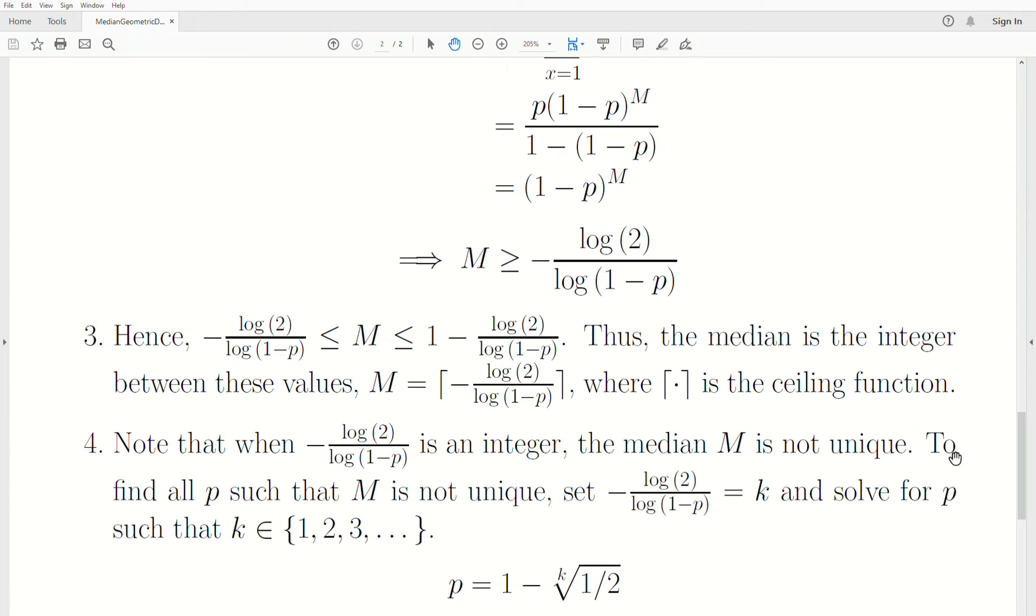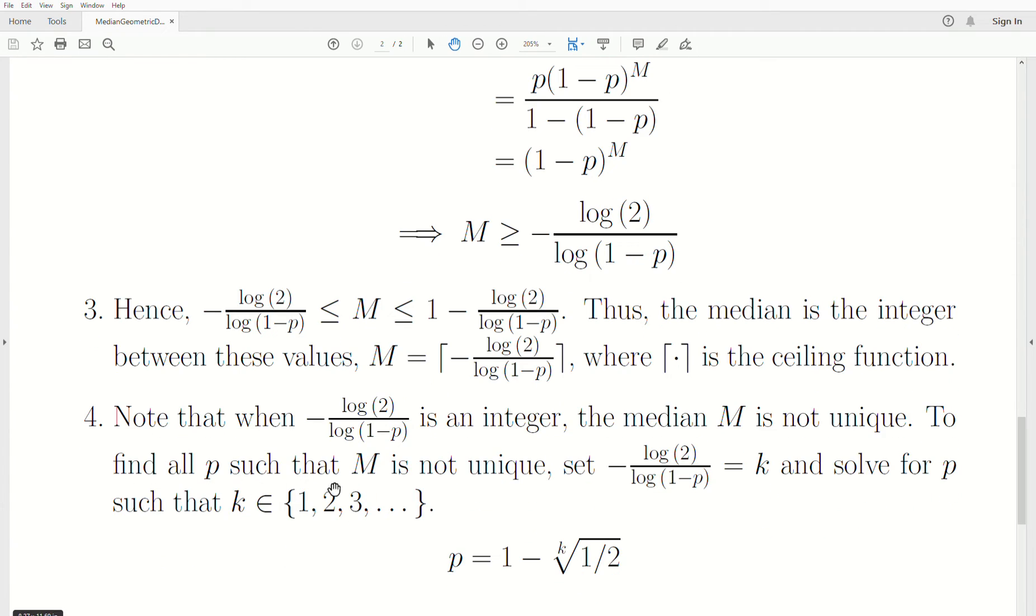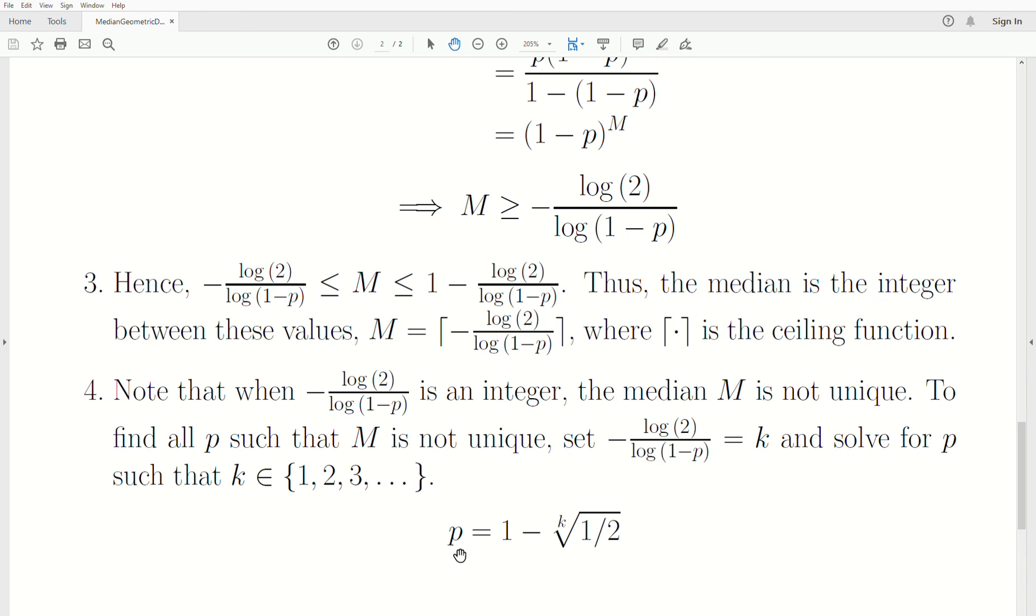To find all p such that M is not unique, let's just set this lower bound equal to some integer k and then solve for p such that k is 1, 2, 3, an integer. You can back solve for p and you get p = 1 - k-th root of one-half. So if p is one of these values, then the median is not unique.